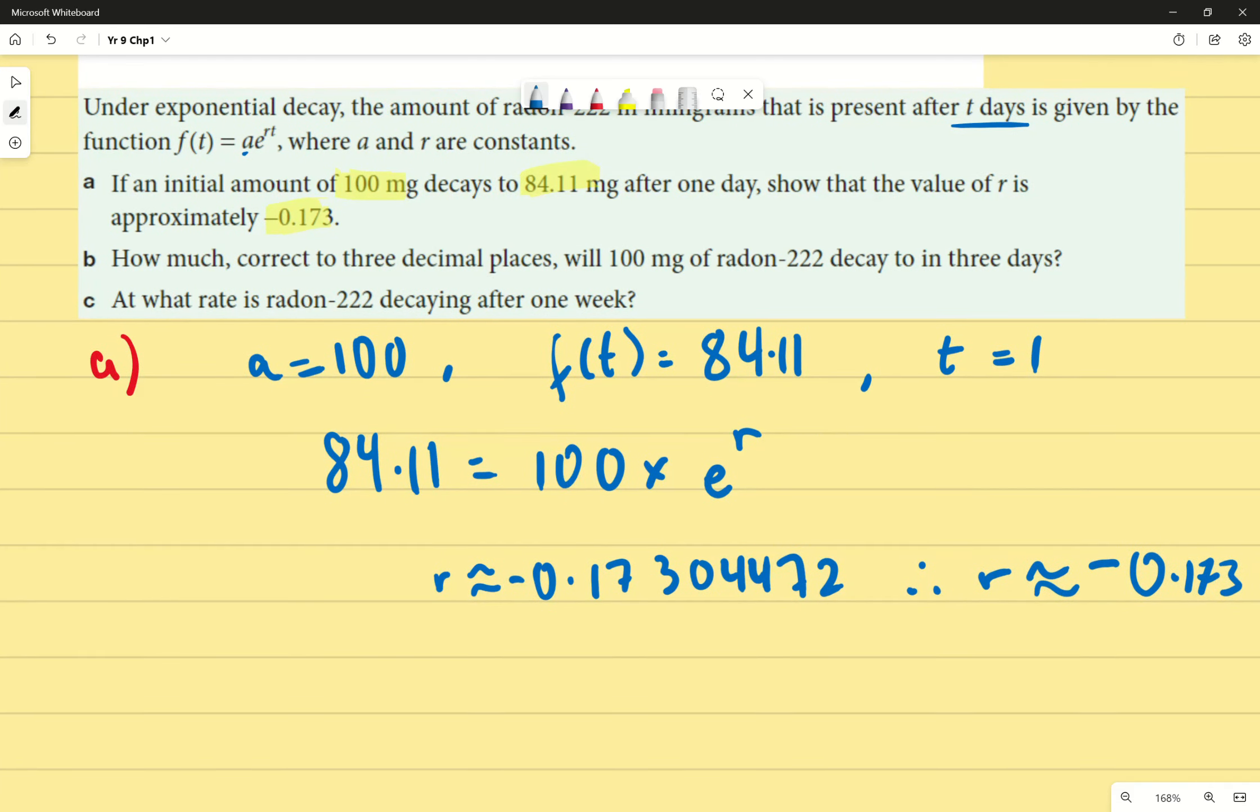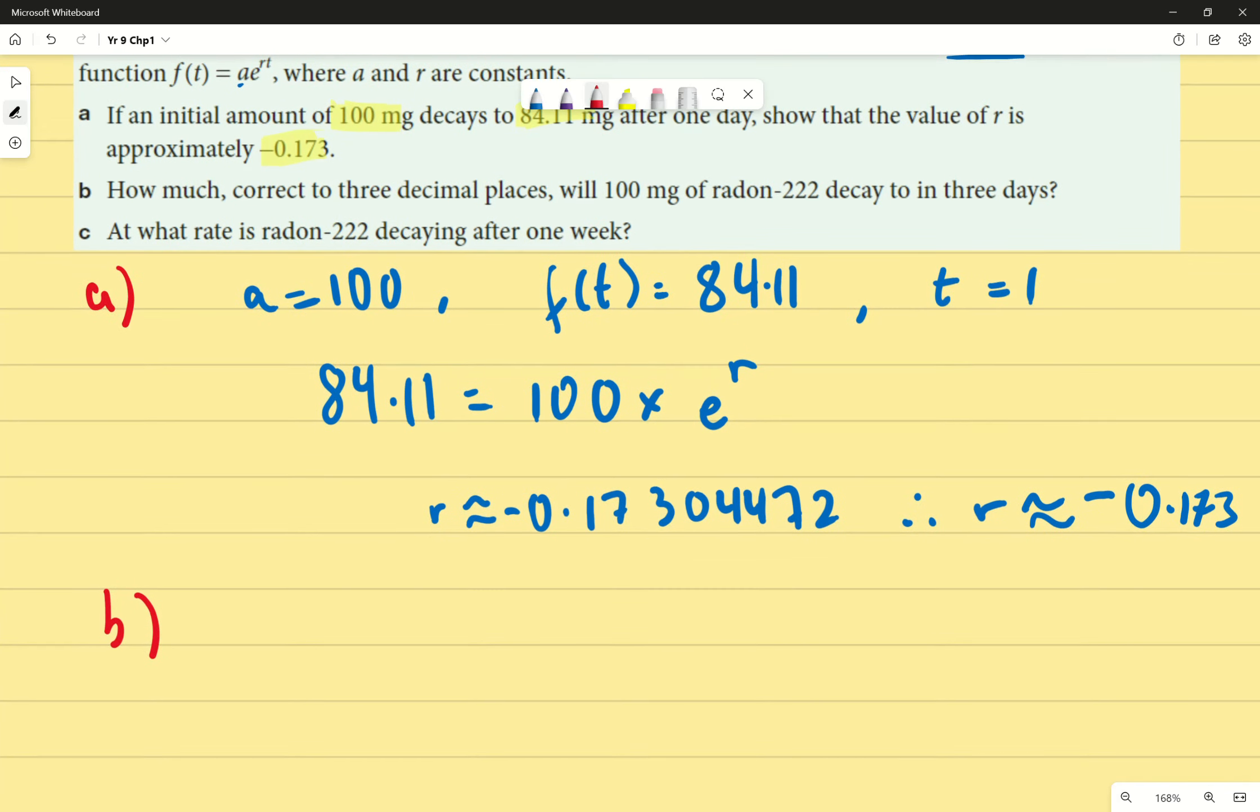From this point on, it's already assuming that you're going to use negative 0.173. If you use your negative 0.17304472, that's fine. You wouldn't get marks lost in an assessment like SAC. However, if the question in a VCE exam specifies assume this value, you must assume that value. Part B asks us how much, correct to three decimal places, will 100 milligrams of radon 222 decay to in three days? We're applying the same principle where we have f(t), except in this case t is going to be represented by 3. So f(3) equals 100 times e to the power of negative 0.173, again we're assuming that value, multiply that by 3, and we end up with approximately, and I'm using approximately here, 59.512. If you are using the correct, as in the negative 0.173, you will end up with this. However, if you're using the extended value, then you end up with 59.504.